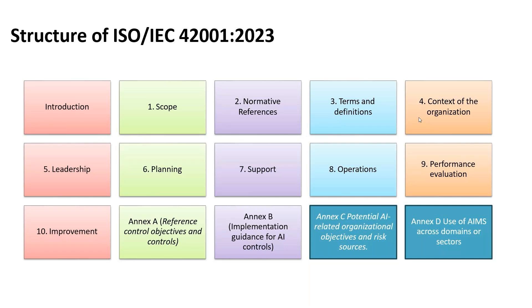From an operations and performance evaluation perspective, we keep improving — working on more maturity of AI models and processes, and increasing education, training, and communication. ISO 42001 also provides a list of controls specifically meant for AI management systems. The next segment will cover impact assessment and risk assessment, and that's how the entire structure of ISO 42001 looks.